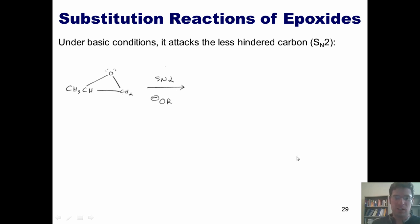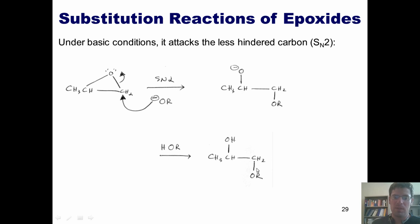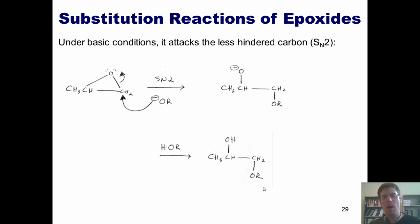This gives a negatively charged intermediate, which eventually gets protonated by another molecule of alcohol to give the product. Note that under basic conditions, the nucleophile and the OH end up on carbons opposite to where they end up under acidic conditions. If you want to see why, please go back to the previous slide and review.